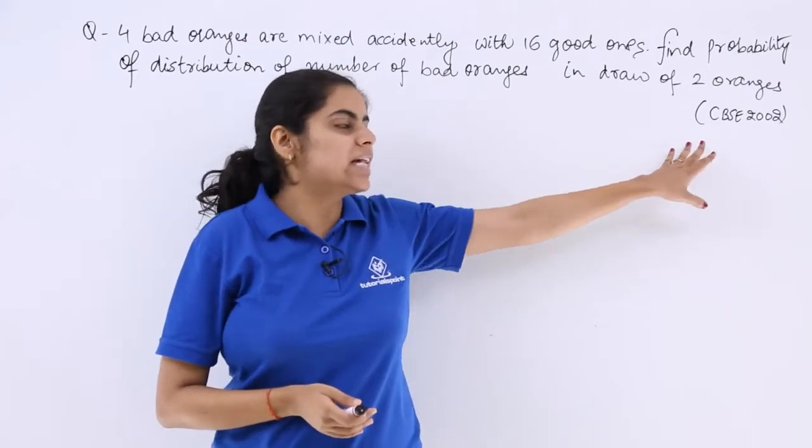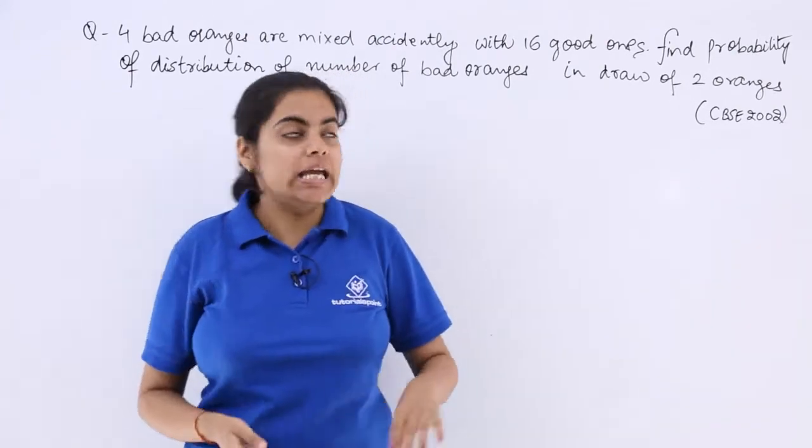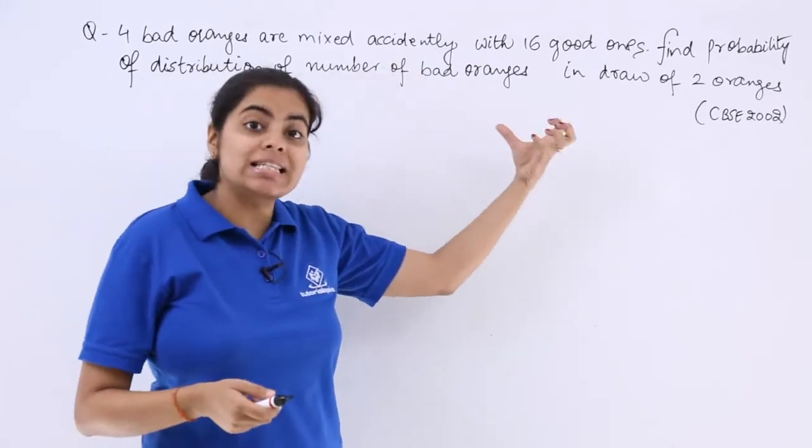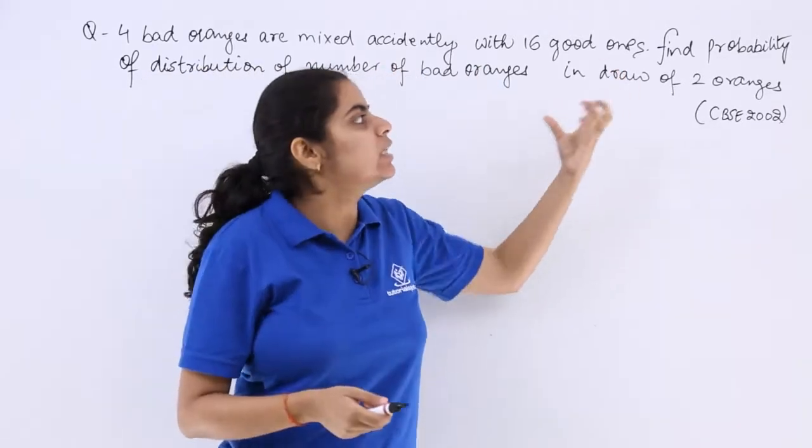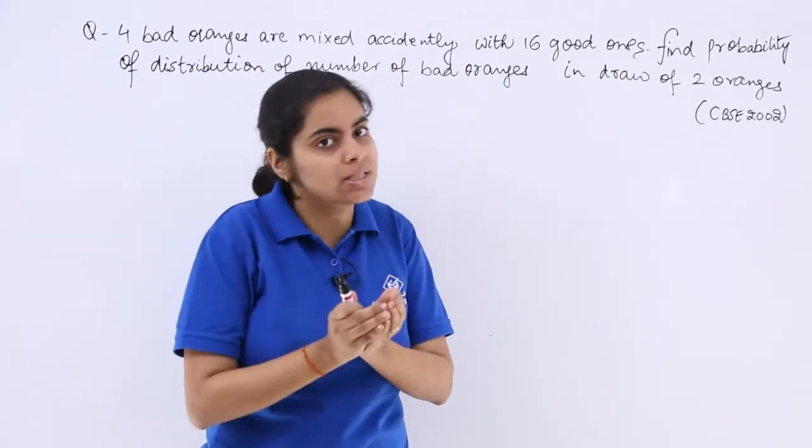Let's see this question asked in the CBSE examination 2002. It says 4 bad oranges were accidentally mixed with 16 good ones. That means total oranges 20.